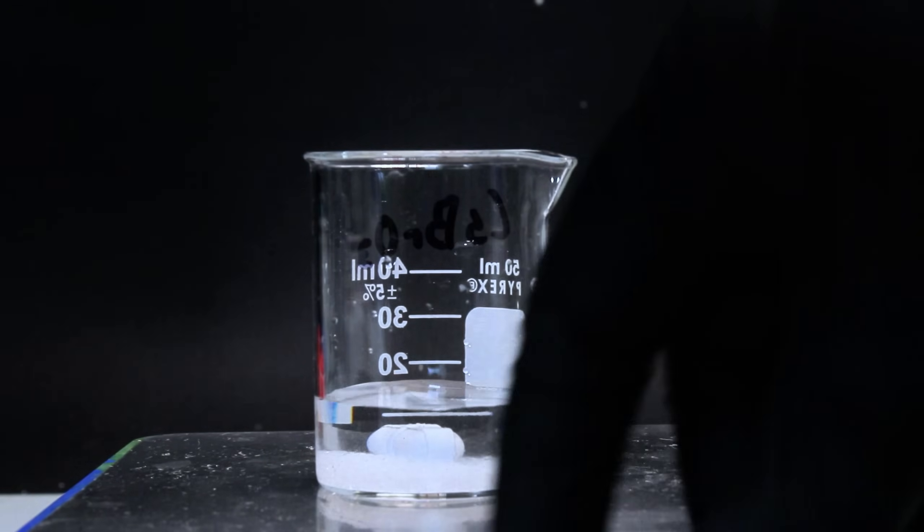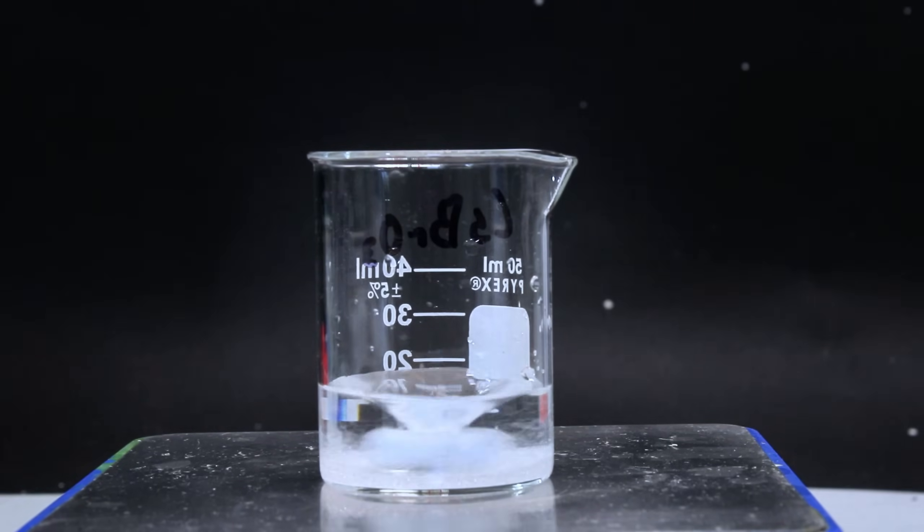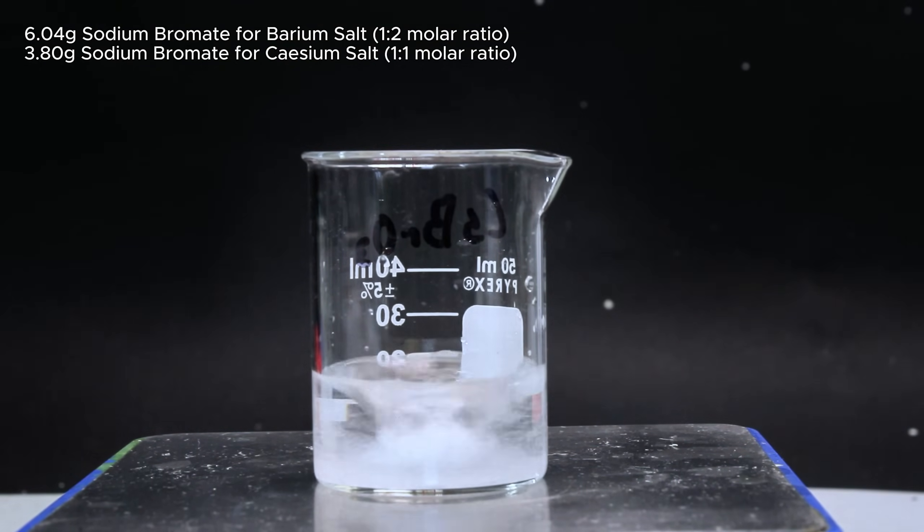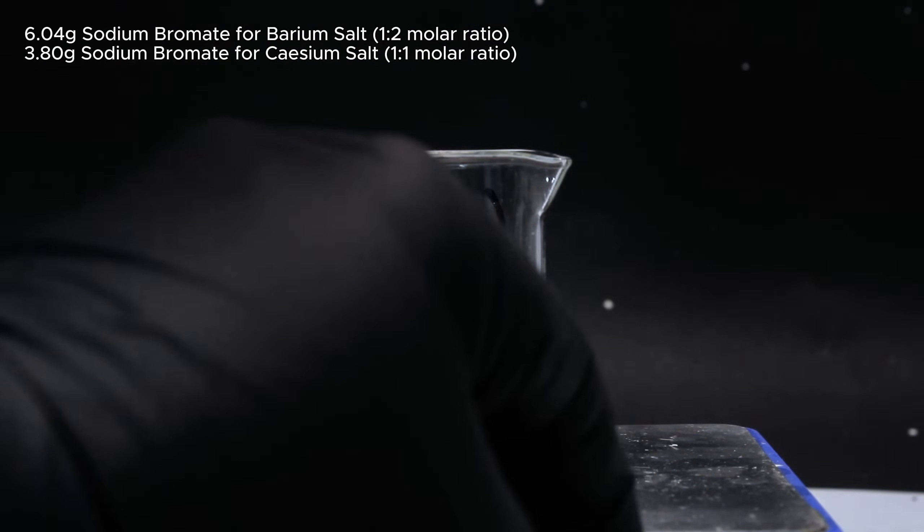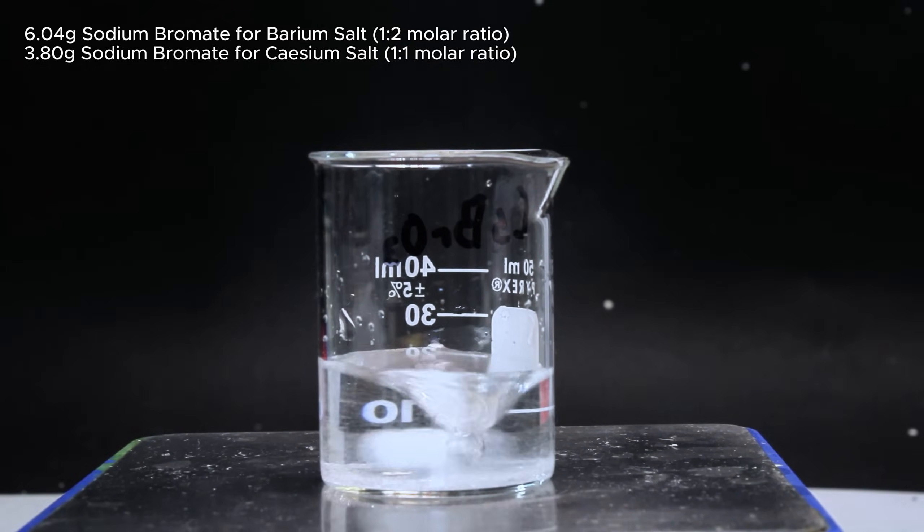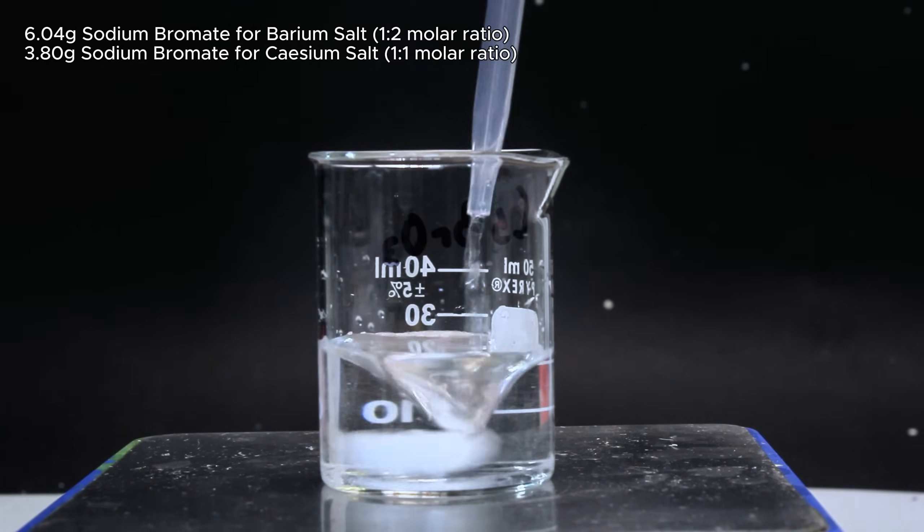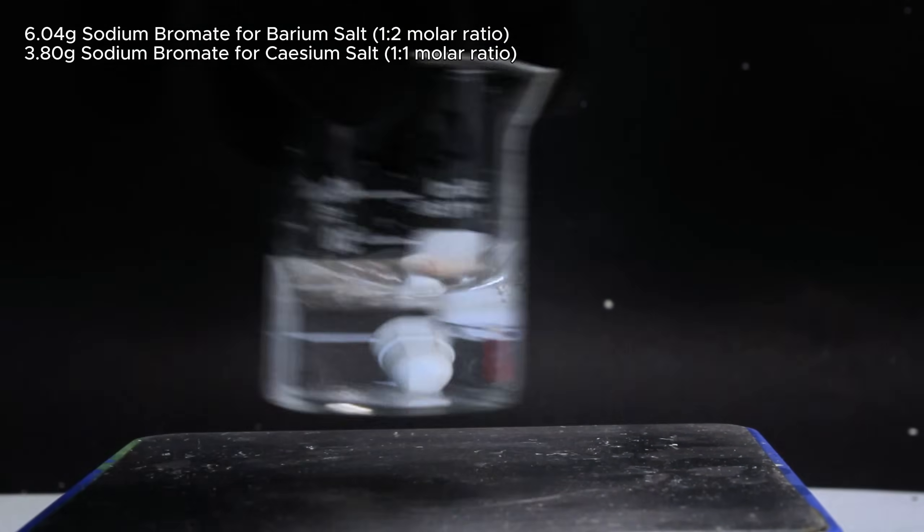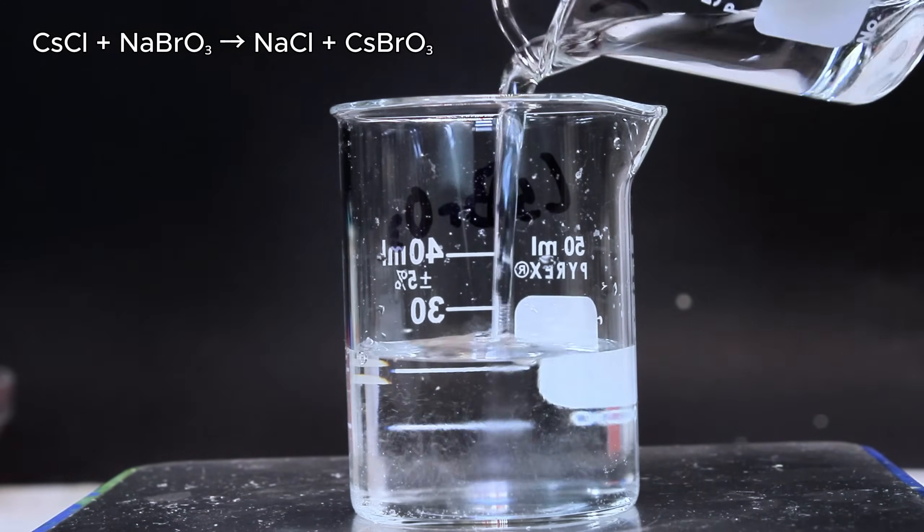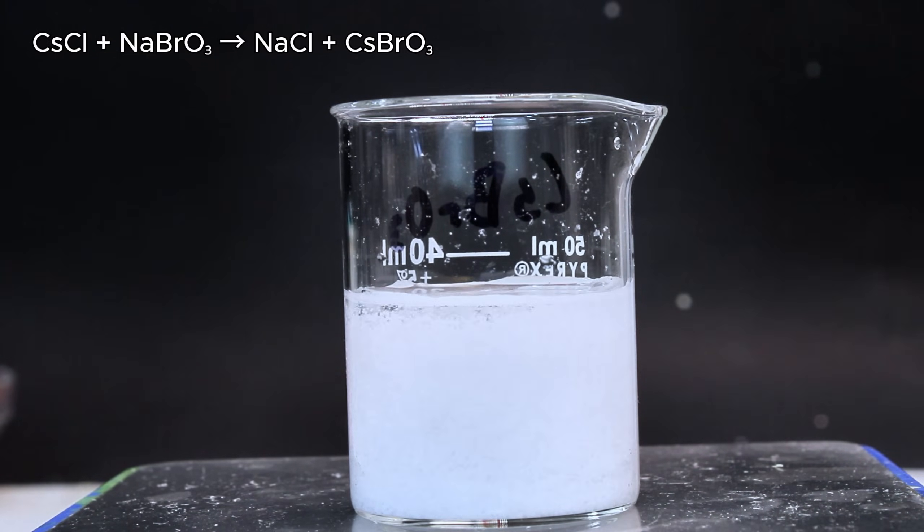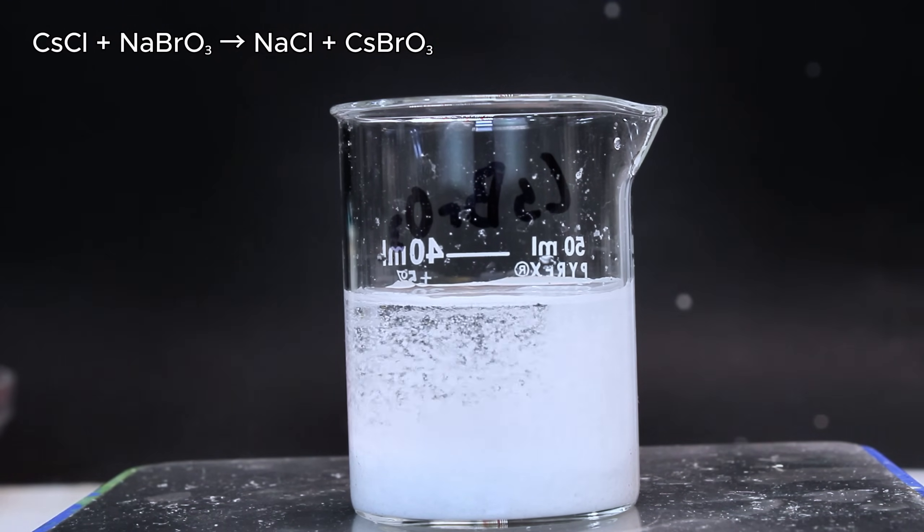To do this, I simply dissolved them in a minimum volume of distilled water along with a molar equivalent of sodium bromate, which is dissolved in a separate beaker. For my 4.16 grams of barium chloride, this corresponds to 6.04 grams of sodium bromate. And for my 4.2 grams of cesium chloride, I would need 3.8 grams of sodium bromate. Once all four salt samples were nice and dissolved, I next poured my cesium chloride solution into its corresponding bromate solution, which immediately resulted in a dense precipitate of the barely soluble cesium bromate.